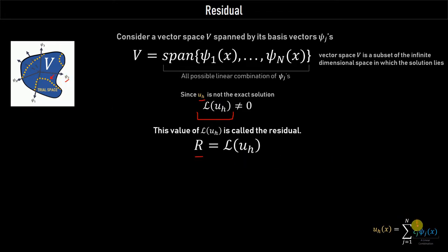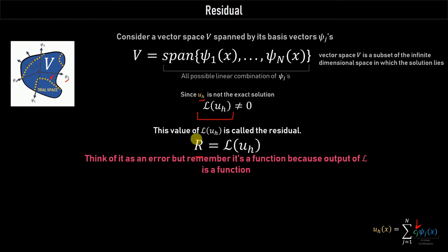The Cⱼ's are the coefficients or weights that we want to find out — this is already a weighted sum. The residual is some kind of error, but not exactly the error. It is not a scalar value; it is a function. The question is how we quantify a specific residual when it is a function, since we normally assign a specific scalar value to an error.